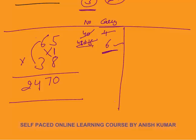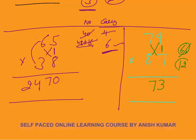One more example: 79×87. Step 1 (U×U): 7×9 = 63 — write 3, carry 6. Step 2 (cross multiply): 7×7 = 49, plus 8×9 = 72; 72 + 49 = 121; add carry 6 → 127 — write 7, carry 12. Step 3 (T×T): 7×8 = 56; add carry 12 → 68. Answer: 6873.